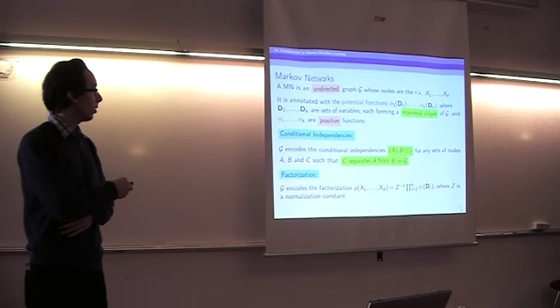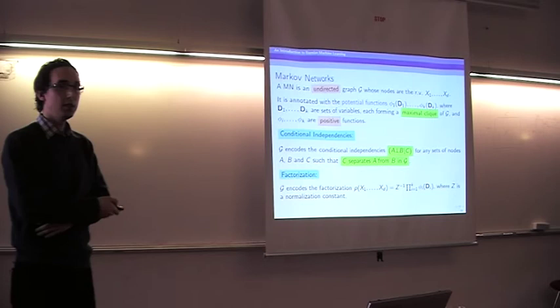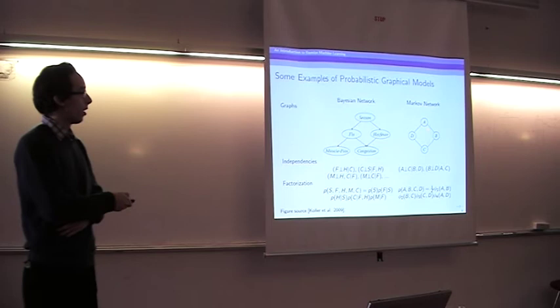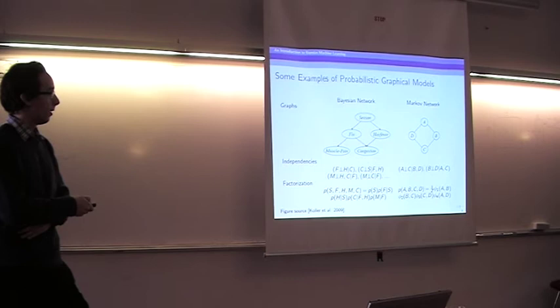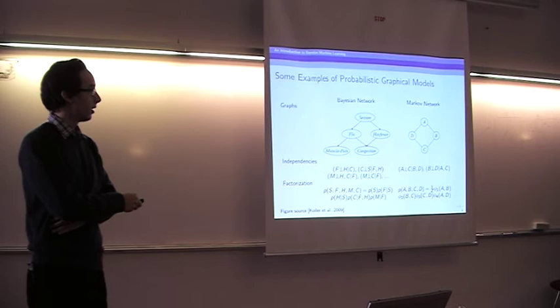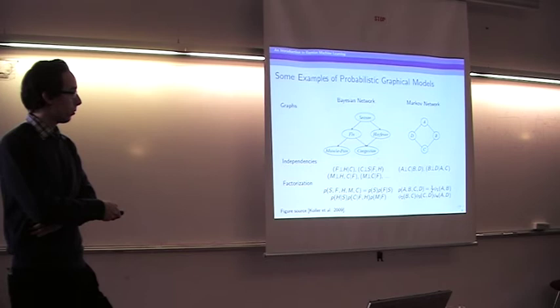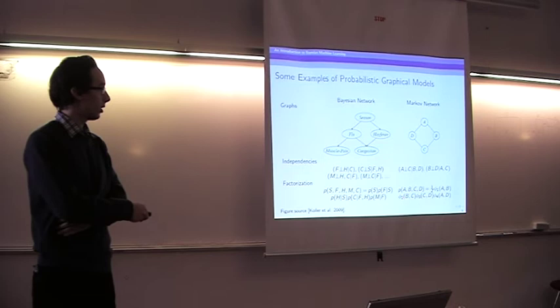In a Markov network we look for all maximal cliques in the graph — sets of fully connected nodes — and have a potential function for each. In this network, the maximal cliques are pairs of nodes such as A-D and B-C, giving a total of four maximal cliques. The joint distribution factorizes as a product of a factor for each of these cliques.